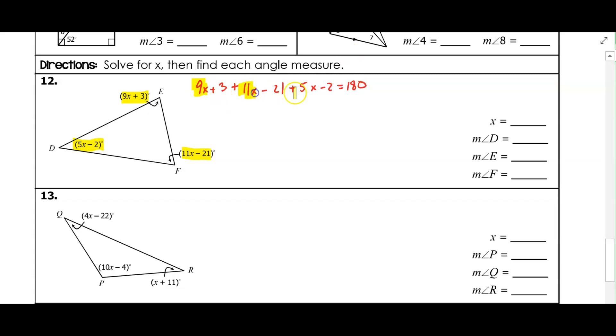So I have a bunch of x's, and I have a bunch of constants. So we'll combine those. So 9x plus 11x, that's 20x, plus another 5x, that's 25x. And then 3 minus 21 minus 2, that should be minus 20, so that equals 180.